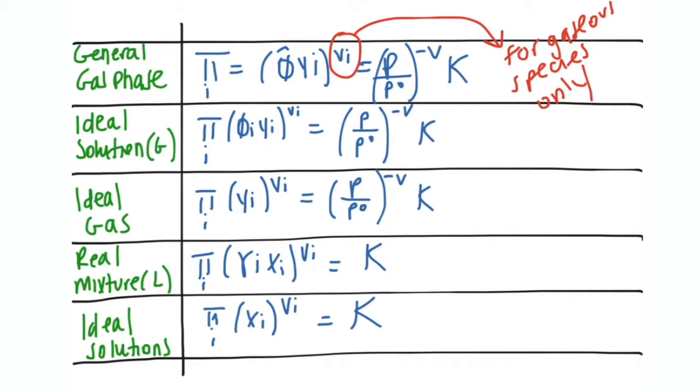So don't worry, I'm gonna explain what this νi is on my next slide. And then also note that this p naught that you see down here is standard state pressure, which is one bar. So it's always going to be that. You might as well just write in one bar right away.